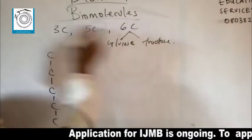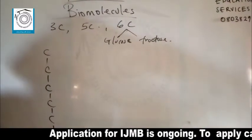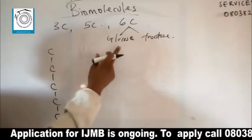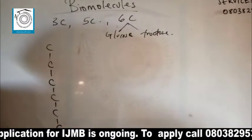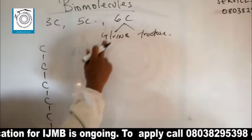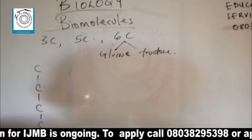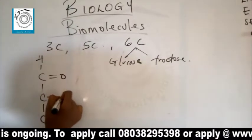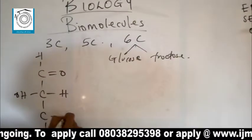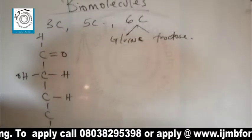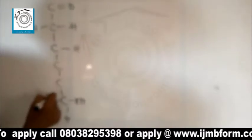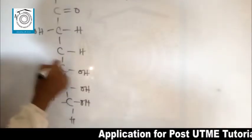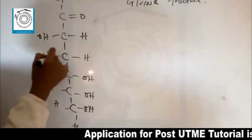In functional group isomerism, they have the same molecular formula but different functional groups. Glucose is an aldose sugar, while fructose is a ketose sugar. For glucose, the straight-line structure has the functional group CHO at the top, followed by OH, OH, H, OH, H, OH, H, OH, and CH2OH at the bottom.